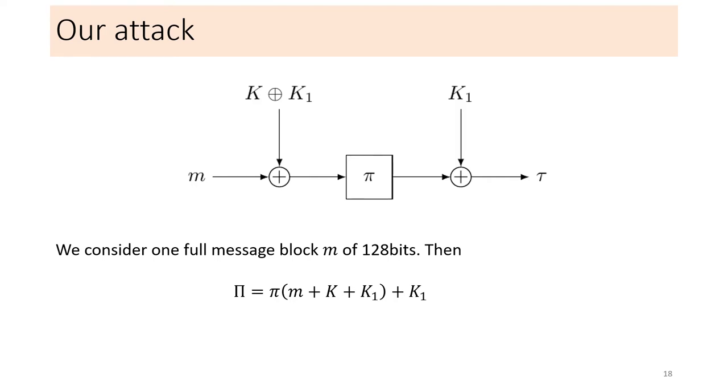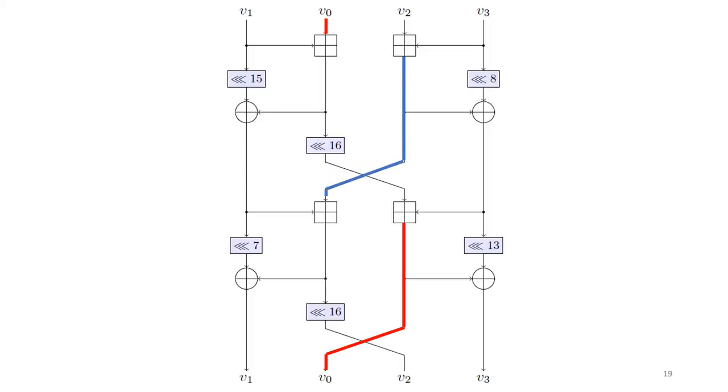Our attack considers one full block of message m and therefore the key added at the end is K1. Then there is only one permutation and the final Chaskey function is as shown here. We need to first evaluate the rotational probability of a single permutation p and then the total rotational probability of the whole function. In order to evaluate the rotational probability of p, we need to determine the number of modular additions and their positions. In the figure is shown one round of the permutation. We can see that there is one chain of two additions colored in blue and two single additions in the round.